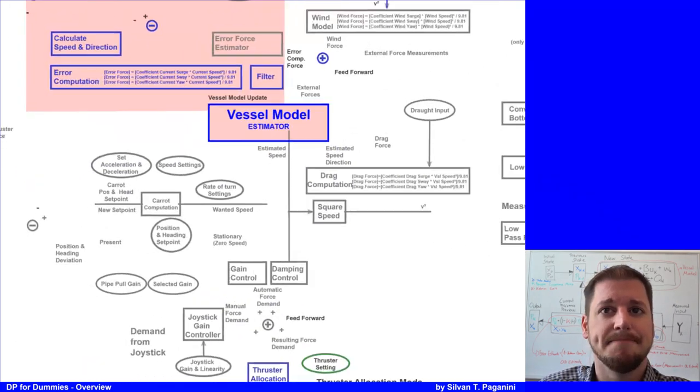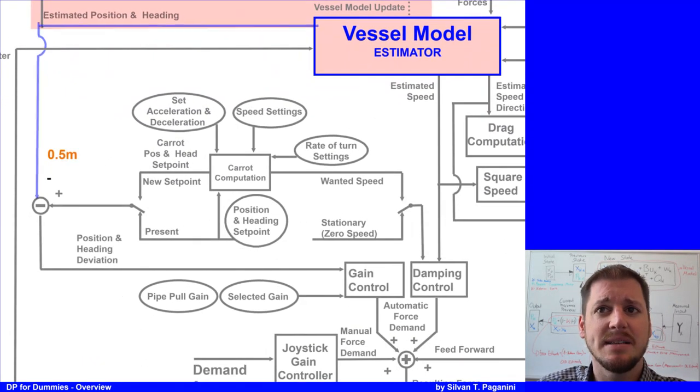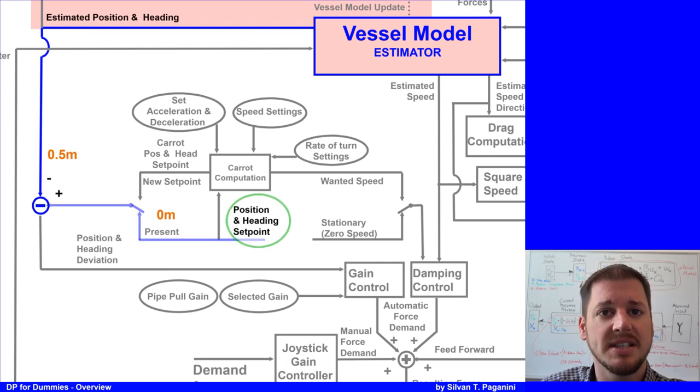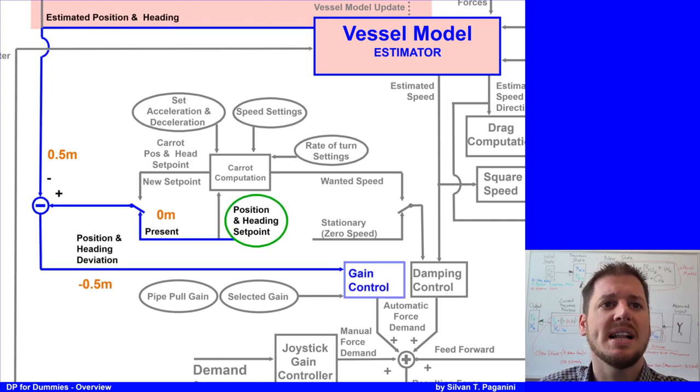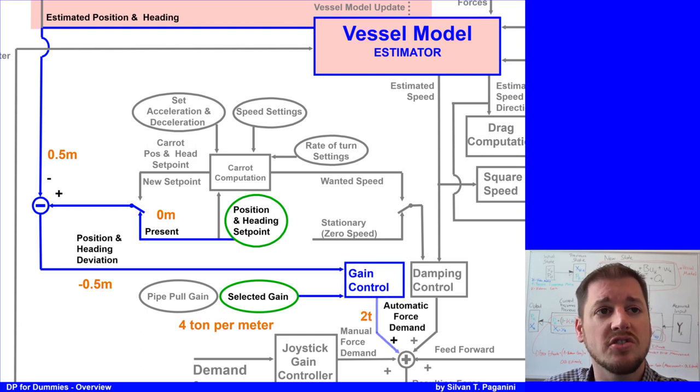Due to the model update, the next estimated vessel position will be half a meter away from the setpoint. Now the automatic access control will apply a force demand that is proportional to the deviation between the estimated position and the position setpoint. Same applies for the heading. Basically the gain will try to force the vessel back into position. In our example, let's say the gain is 4 tons per meter offset. The estimated vessel position is now 0.5 meters away from the setpoint and therefore it will apply 2 tons to get back to the setpoint.